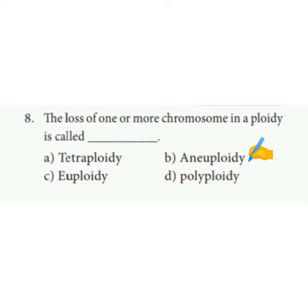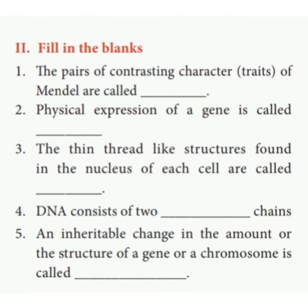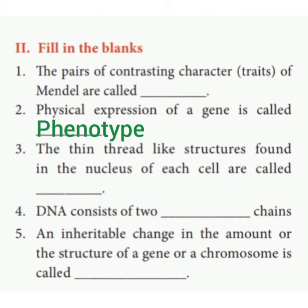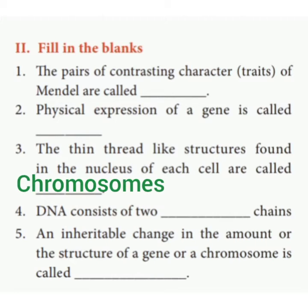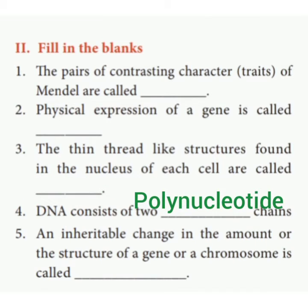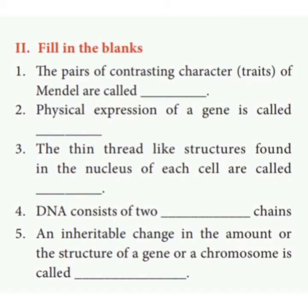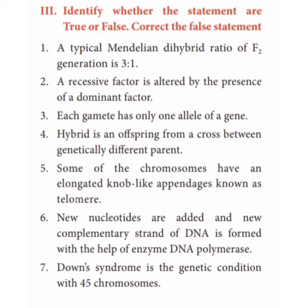Seventh, the number of chromosomes found in human beings is 22 pairs of autosomes and one pair of allosomes. Eighth, the loss of one or more chromosomes in a ploidy is called aneuploidy. Fill in the blanks: First, the pairs of contrasting characters of Mendel are called alleles. Second, physical expression of a gene is called a phenotype. Third, the thin thread-like structures found in the nucleus of each cell are called chromosomes. Fourth, DNA consists of two polynucleotide chains.